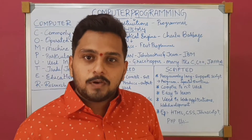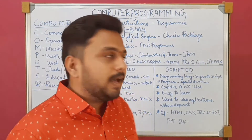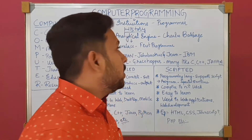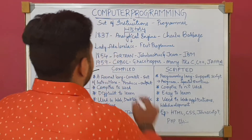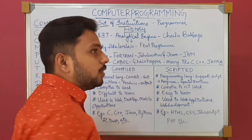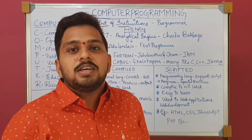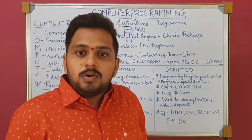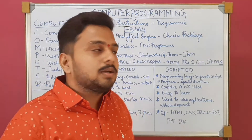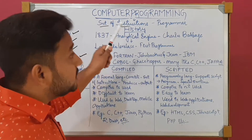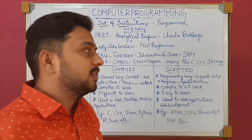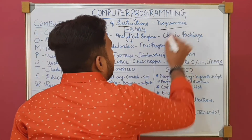Does a computer work on its own? No, it has to be given some set of instructions or input to perform a specific task. Providing a set of instructions to the computer to perform a specific task is known as computer programming. Then who is a programmer? The person who provides these set of instructions to the computer to perform a specific task is known as a programmer.